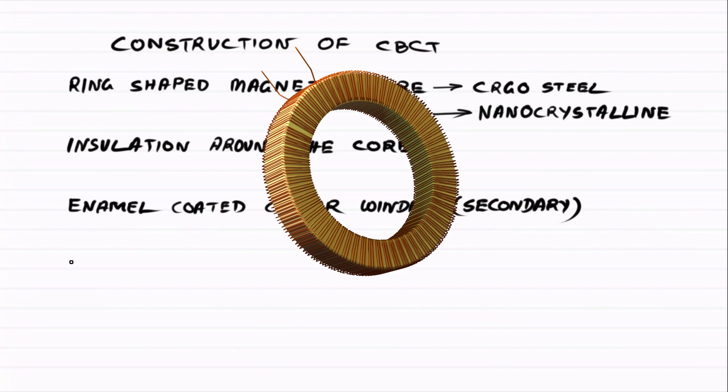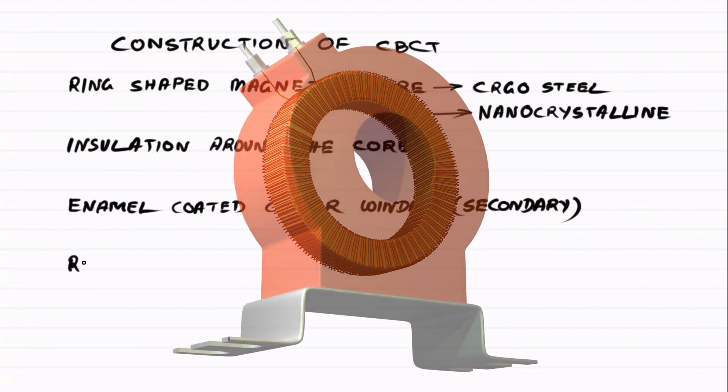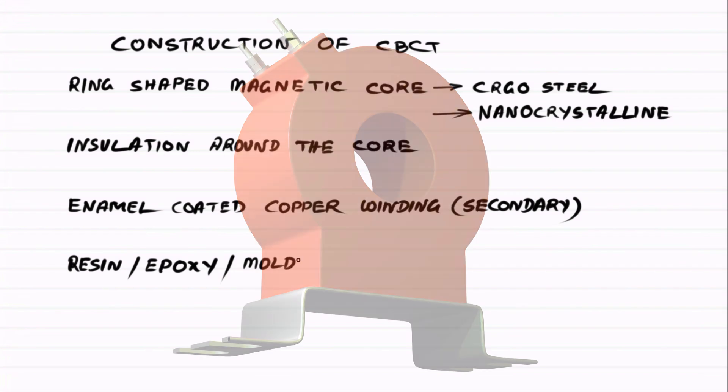Then they wind enamel-coated copper wire over it to make the secondary winding. The number of turns depends on how sensitive we want the device to be in detecting small fault currents. The entire assembly is sealed in resin cast, epoxy or molded plastic.